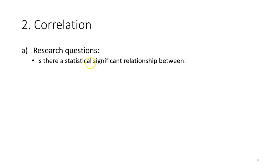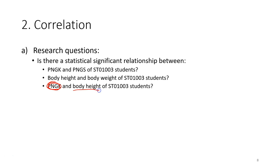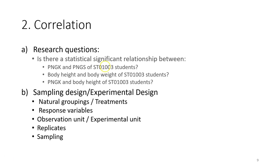For correlation, the research question is something like: is there a significant relationship between two variables? For example, is there a relationship between the semester average grade point with the cumulative average grade point? Or whether there's a relationship between body height and body weight among students, or between academic performance measured as cumulative GPA and body height.